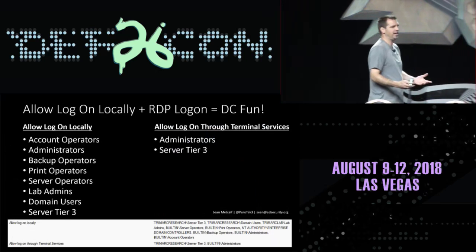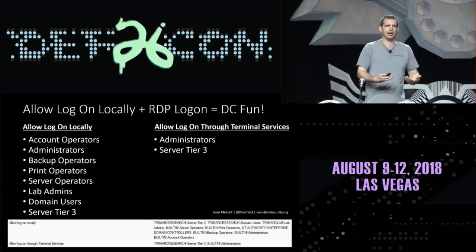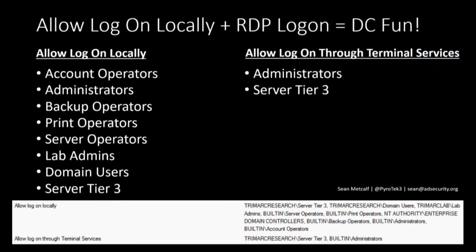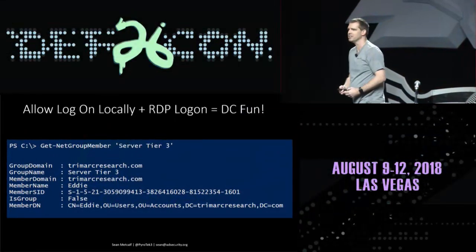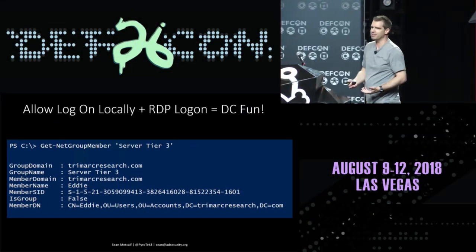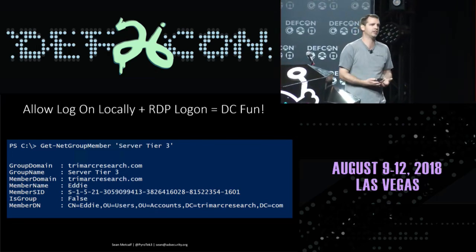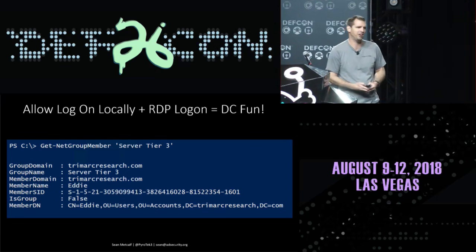There's a way through user rights assignments to log on over RDP to a domain controller. If 'Allow logon locally' and 'Allow logon to terminal services' are configured, a group like 'Server Tier 3' can do this. Only domain admins and administrators should ever be able to log on to domain controllers via RDP. But a lot of times we find otherwise. Who's in Server Tier 3? It's Eddie — a regular user account. Whoever can compromise Eddie can get onto the domain controller, and from there you can do a lot of fun stuff.